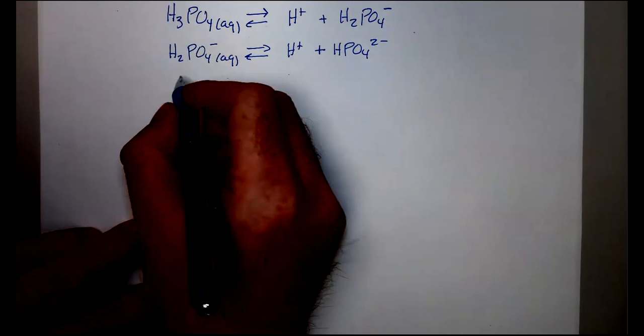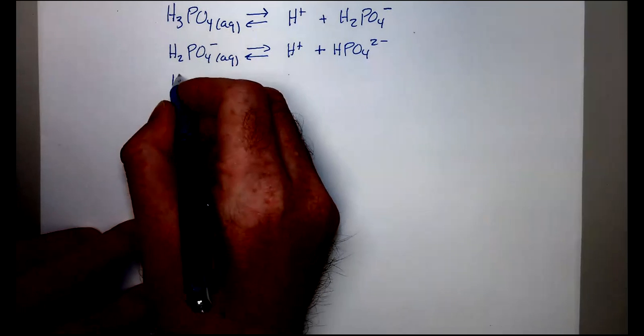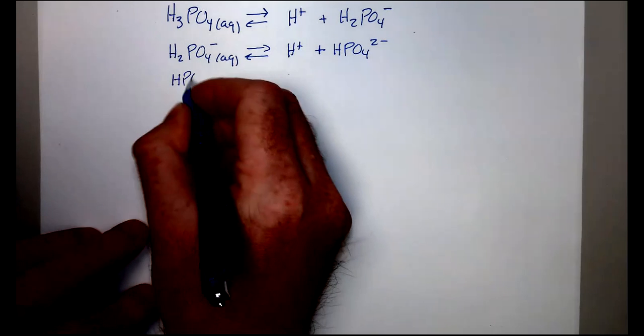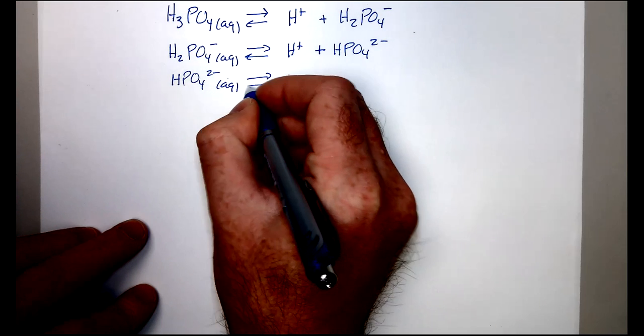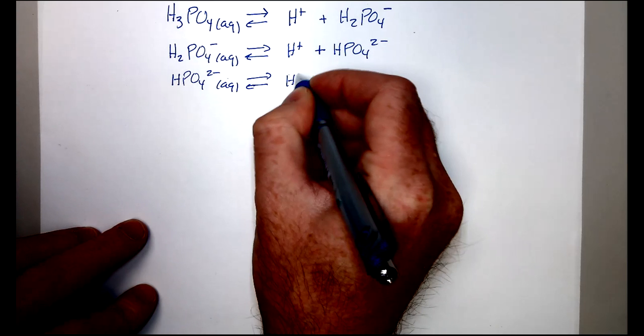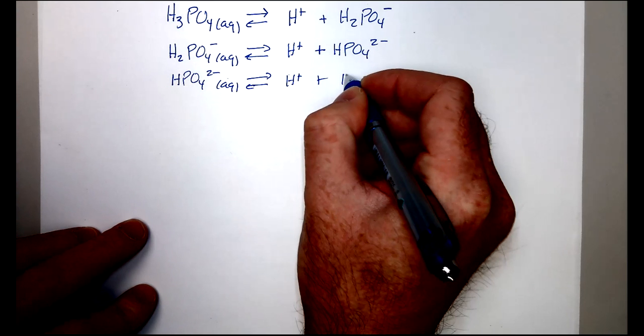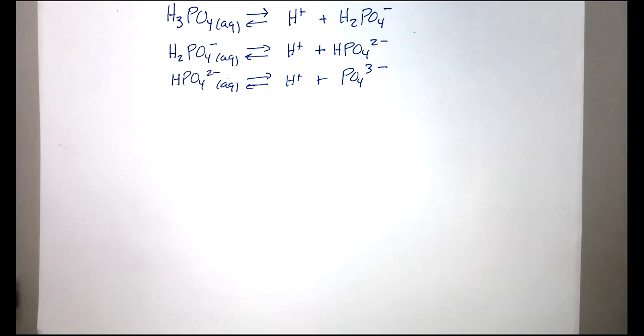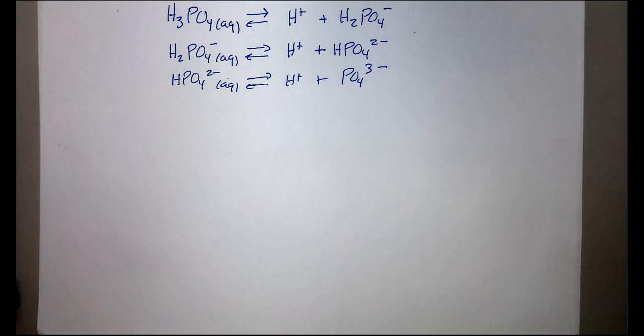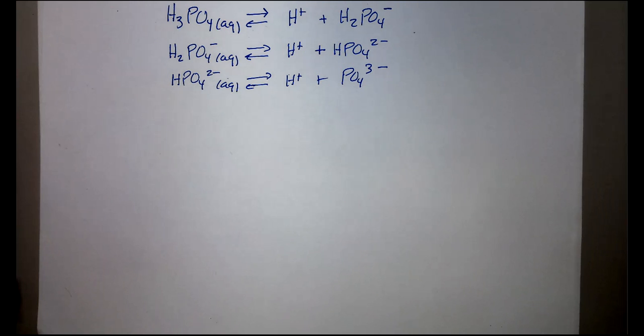But then you still have a third ionization that's even less significant. HPO4 2 minus aqueous. You're going to go to H plus plus PO4 3 minus. And so we can have even further ionization past that, but each one gets significantly less for each ionization.